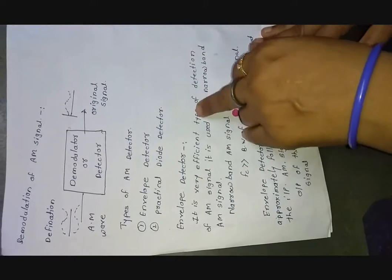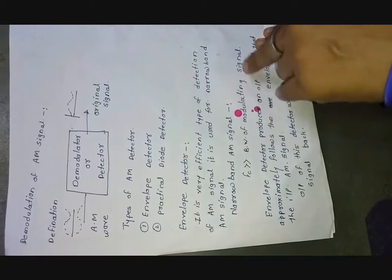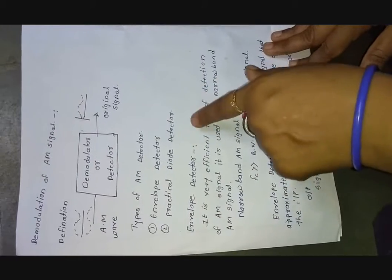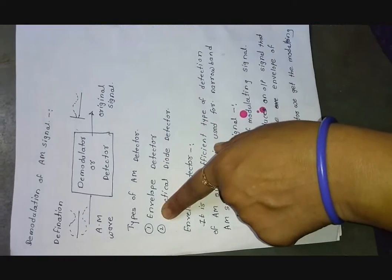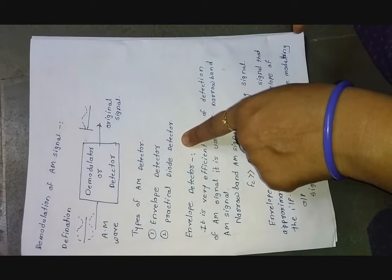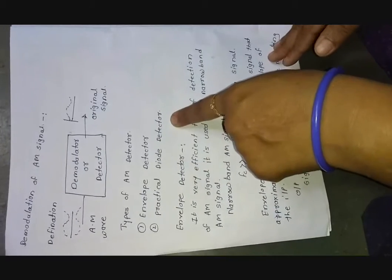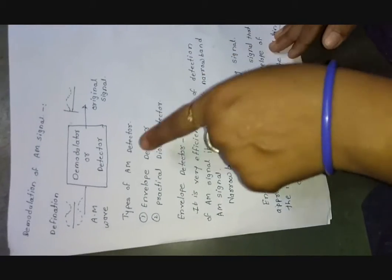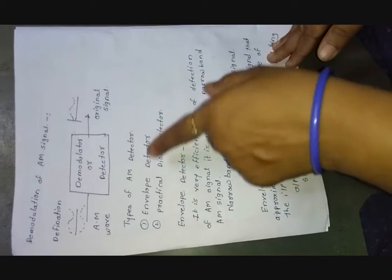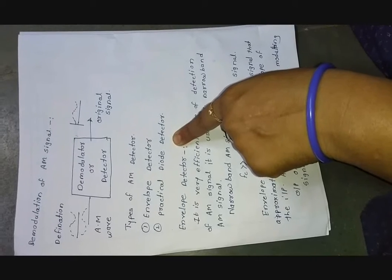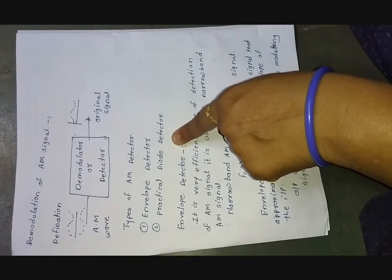The types of AM detector are totally dependent upon the bandwidth of the AM signal. If the AM signal bandwidth is related to narrowband, then the envelope detector type comes into picture. If the bandwidth is related to wideband, then the practical diode detector comes into picture. When the diode works in the positive half cycle, that detector is called an envelope detector; when it works in the negative half cycle, it is called a practical diode detector.